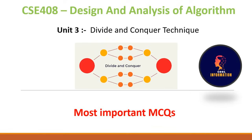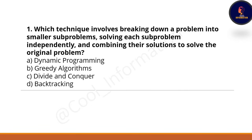Coming to the first question: which technique involves breaking down a problem into smaller sub-problems, solving each sub-problem independently, and combining their solutions to solve the original problem? Option A is dynamic programming, Option B is greedy algorithm, Option C is divide and conquer algorithm, and Option D is backtracking. The correct option is Option C — divide and conquer algorithm.